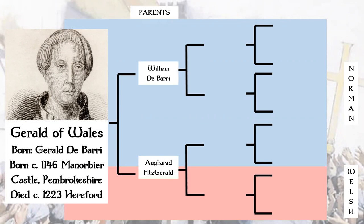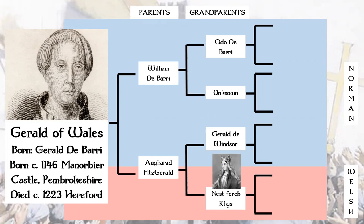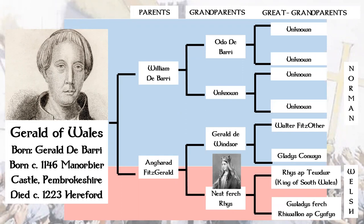His parents were William de Barry and Harad Fitzgerald. His grandparents are Odo de Barry and his wife, who is unknown. His mother's parents were Gerald de Windsor, who was a Norman, and his mother Nest Ferch — who is Welsh, as you can see in the picture. His great-grandparents on his father's side are all unknown, and on his mother's side they are Walter Fitzother and Gladys Conwyn, and then Rhys Ap Tudor, who is King of South Wales, and his wife Gladys Ferch Rhwallon Ap Cynwyn.